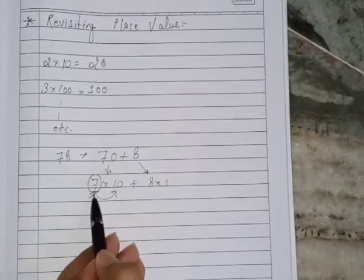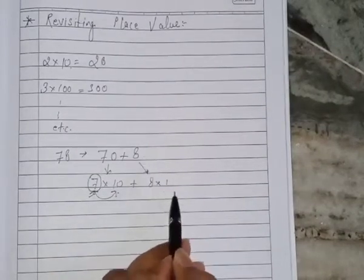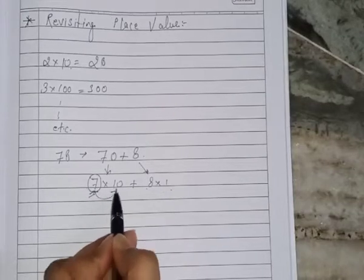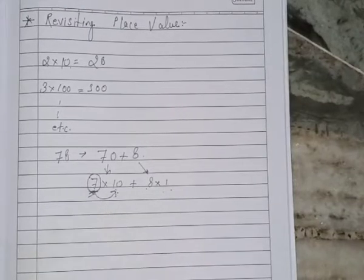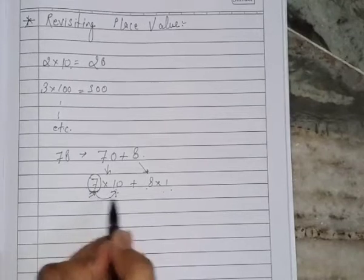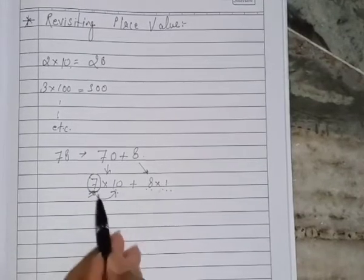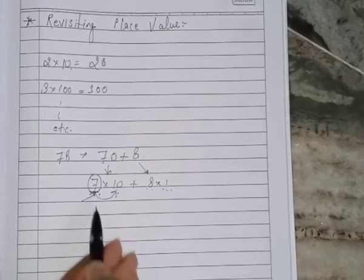Now 70 you can write as 7 × 10 and 8 as 8 × 1. If 7 is multiplying by 10, its place value is tens. So this is 10s place value and this is at 1s place value.